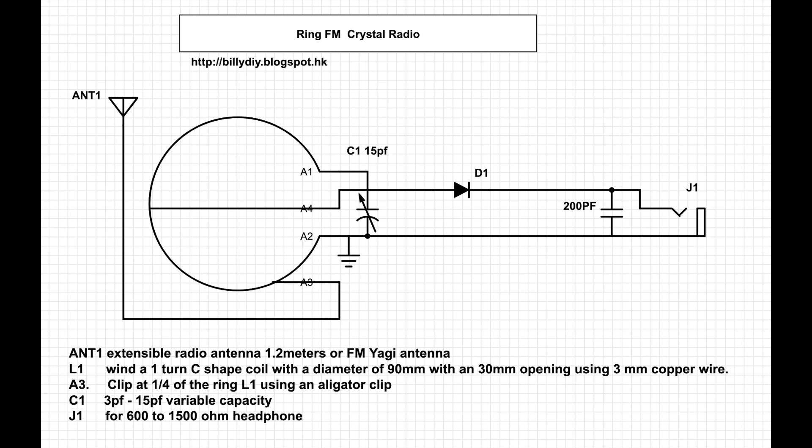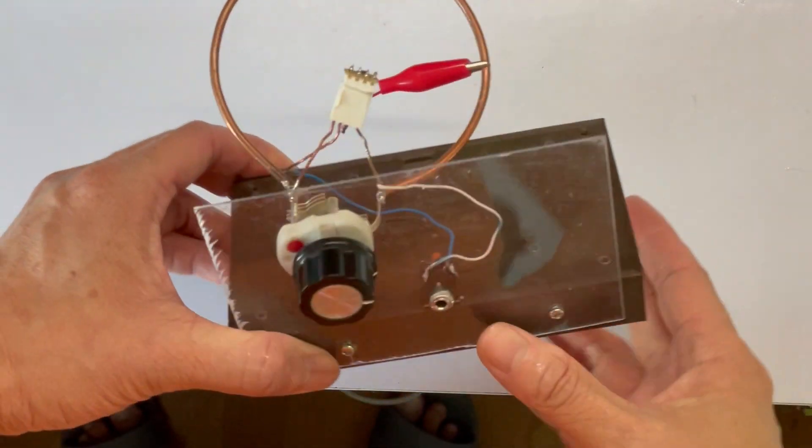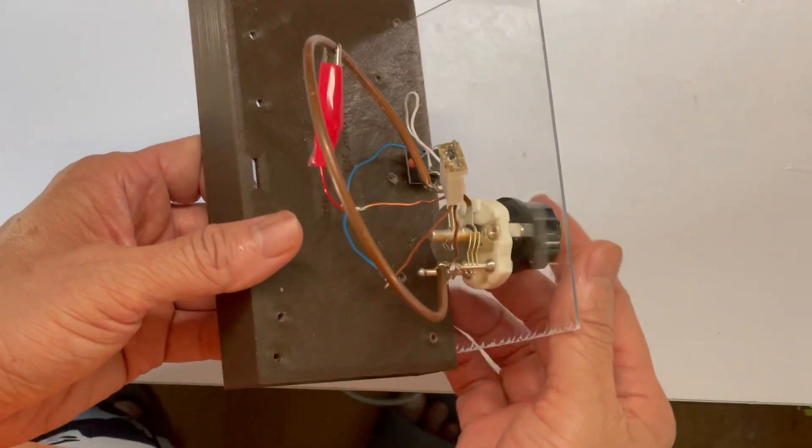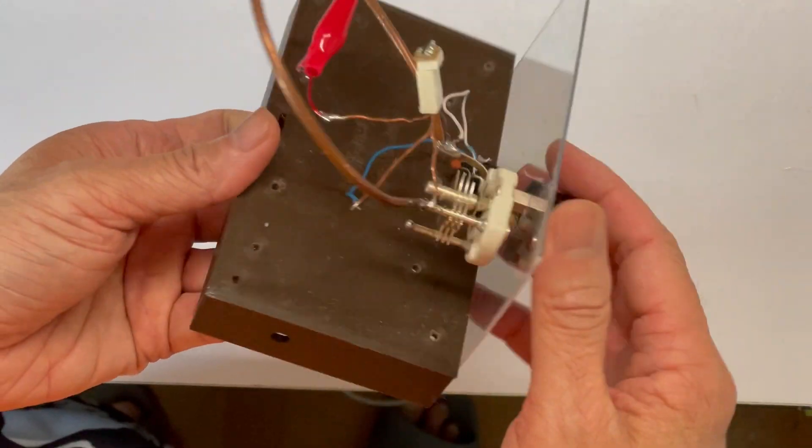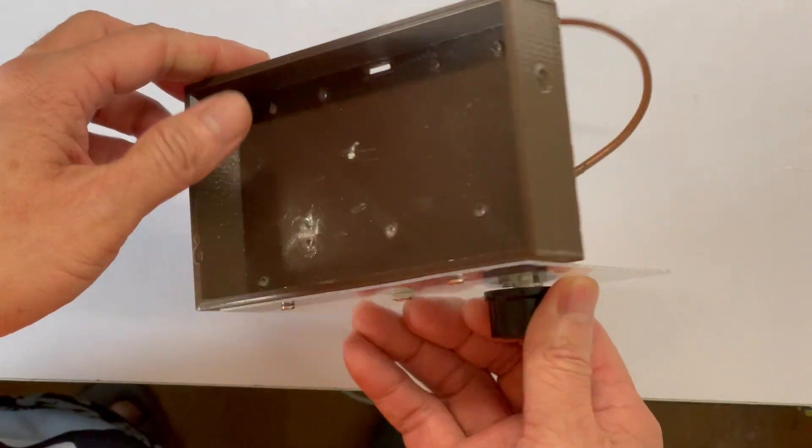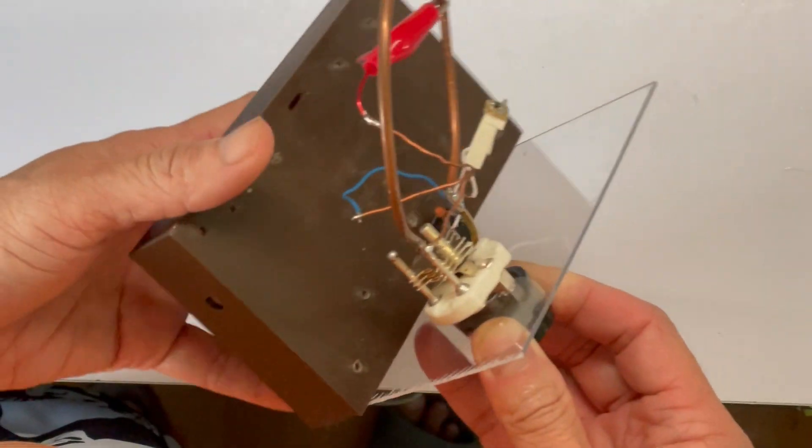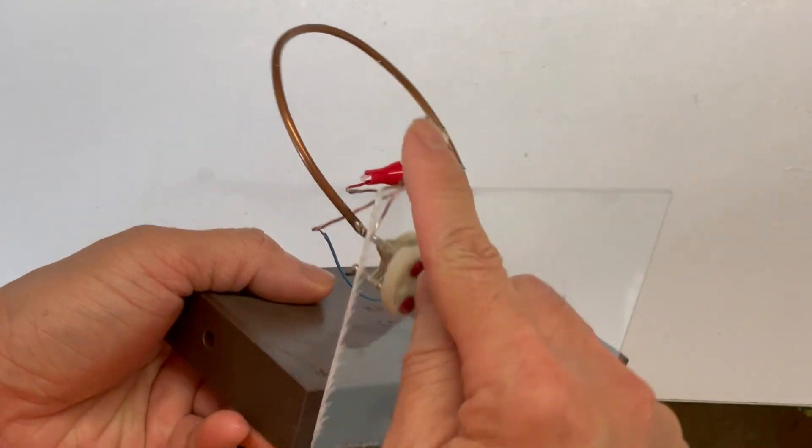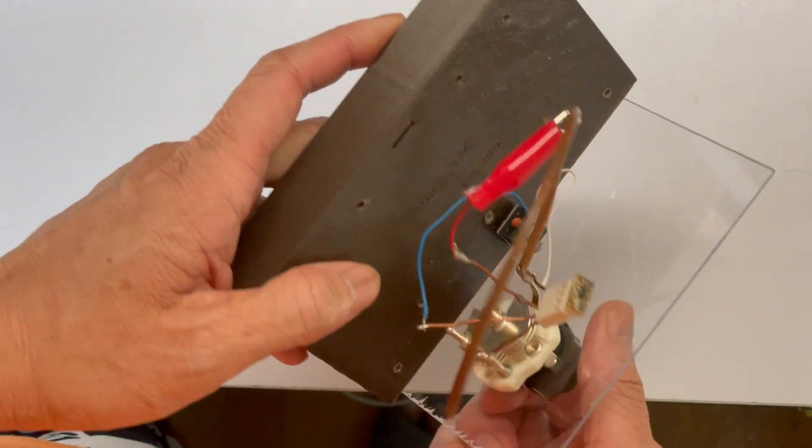Next, let me show you the finished product before the testing. Okay, I've mounted the circuit to a board. This is just a base I've printed using the 3D printer plus an acrylic board, so we can see through it.